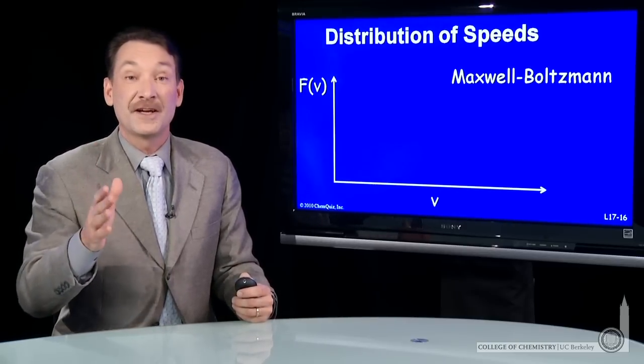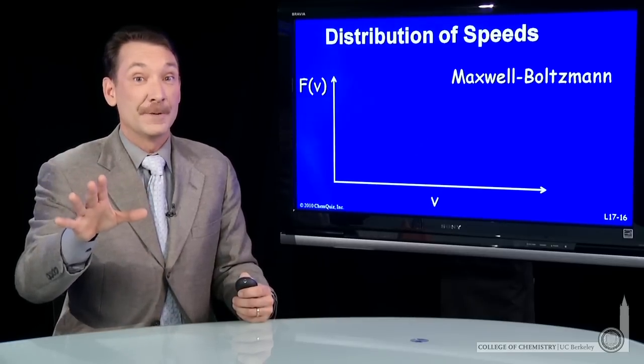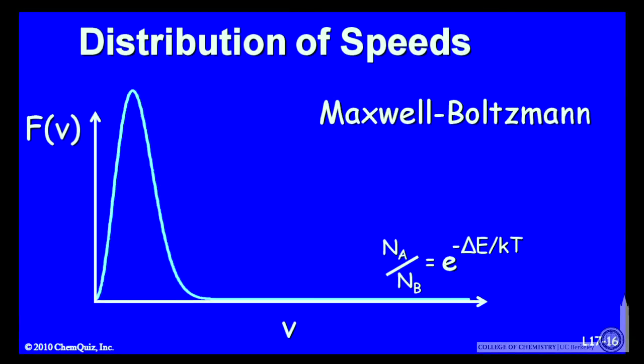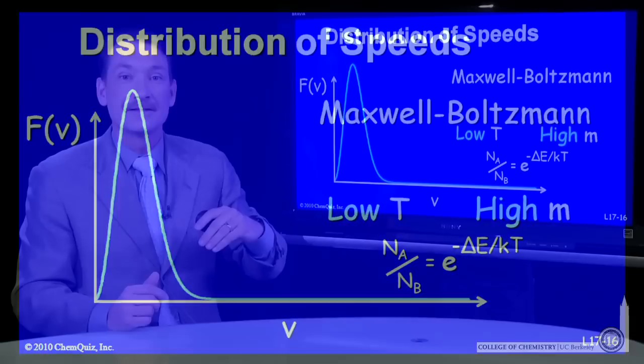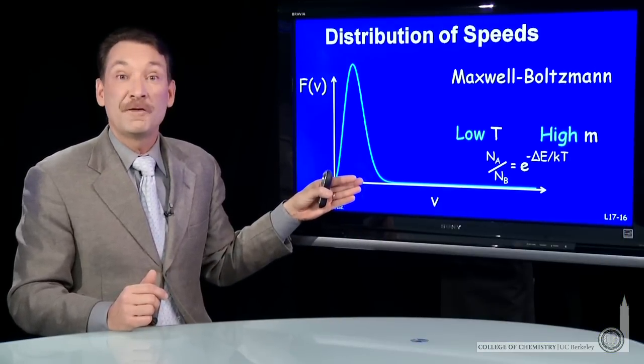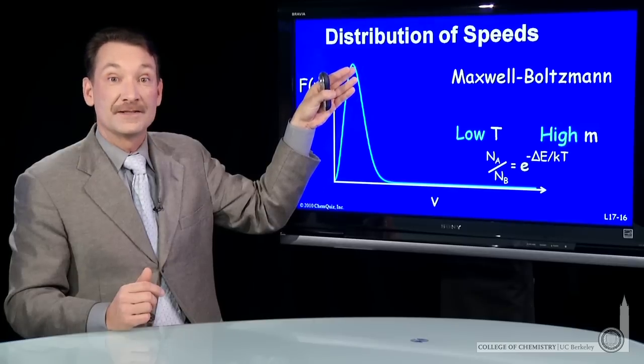It follows a specific functional form. We're not interested in the exact functional form here, but we do want to look at the shapes of these curves. So here's a Maxwell-Boltzmann distribution that follows a specific form for a gas at, say, a low temperature or a high molar mass.